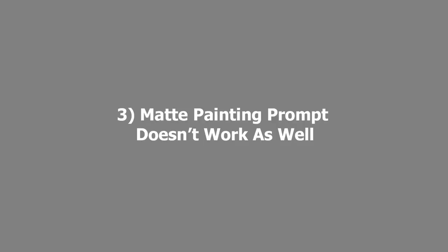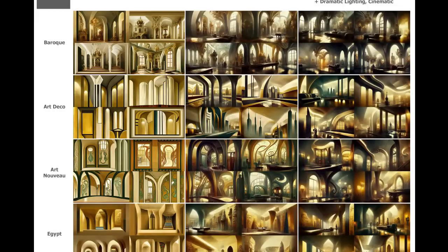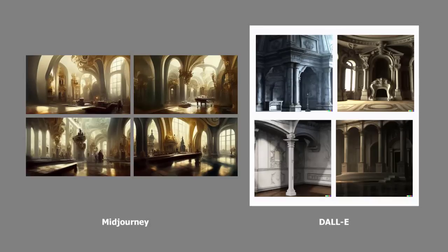In my last lesson, I showed what happened when you applied the prompt modifier 'matte painting' to an architectural image. I tried the same test in DALL-E. The MidJourney image doesn't just look more painterly — it also seems to capture more of what I'd consider the matte painting feel. The DALL-E image doesn't really capture it nearly as well.